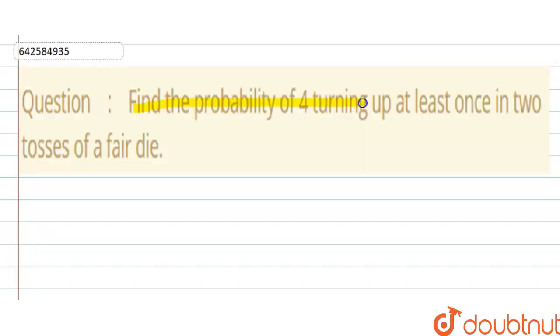Find the probability of 4 turning up at least once in 2 tosses of a fair die.